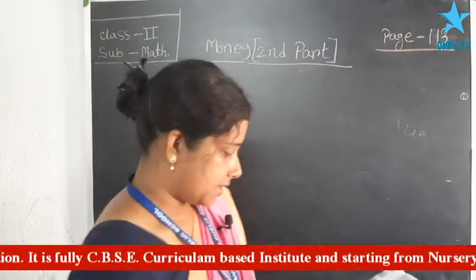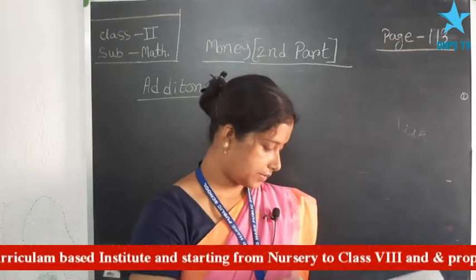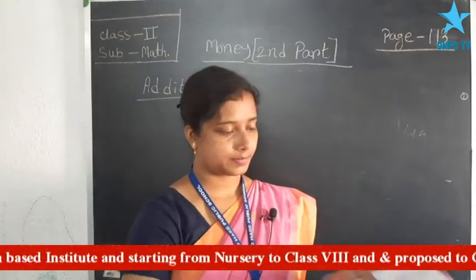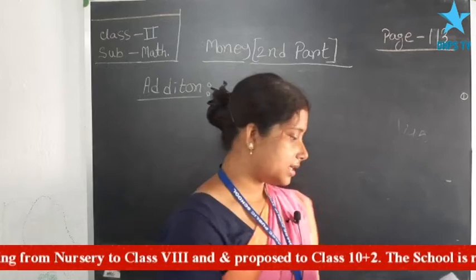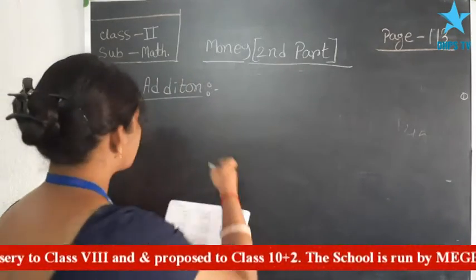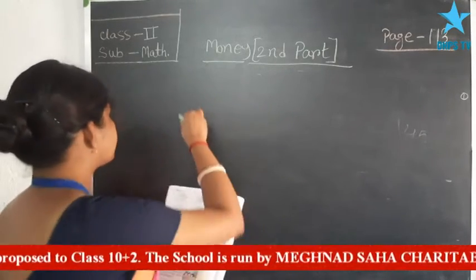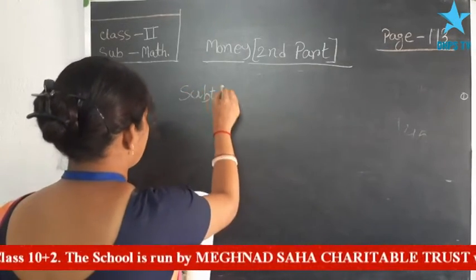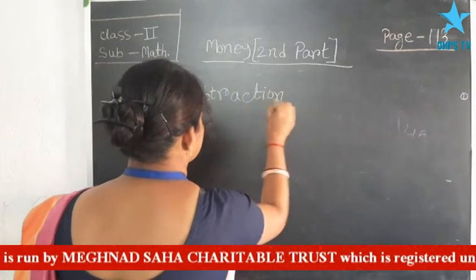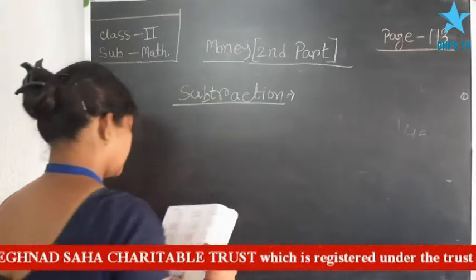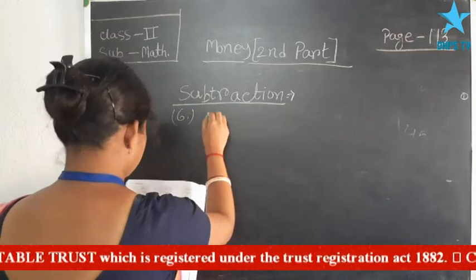Next, turn the page to page number 114. In this page some problems about subtraction are given. The first problem has already been done for you. Now I am solving problem number k.